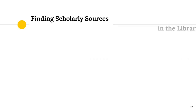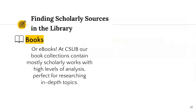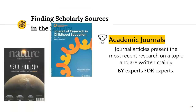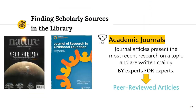Scholarly sources can come in many different formats, the most common being books and journal articles. Books at CSUB are reviewed before purchase by librarians to ensure that they fit in with the scholarly collection that we know our students need. Our books have a high level of analysis and can be a great source of information. We have traditional print books physically available from the library, or even ebooks that you can view electronically from anywhere. Journal articles present the most recent research on the topic and are written mainly by experts for experts. One particular type of journal article you need to know is called a peer-reviewed article — you'll want to make note of it because you'll be hearing it a lot from your professors.